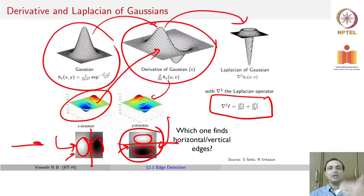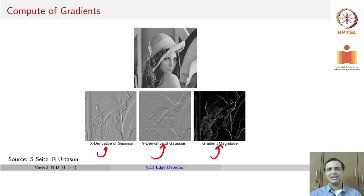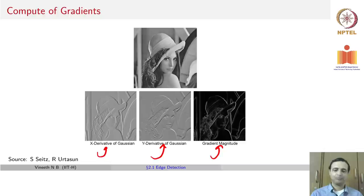If you now compute gradients — the x derivative of Gaussian and the y derivative of Gaussian — you can take the gradient magnitude as the square root of the x derivative squared plus the y derivative squared, and you will find a set of edges. Using the popular LENA image as an example, this gives you a first level of edges.